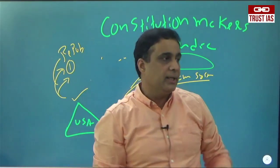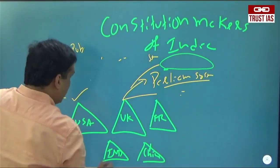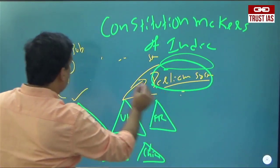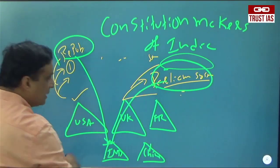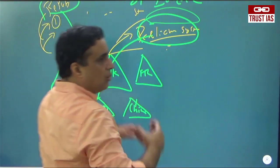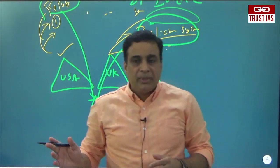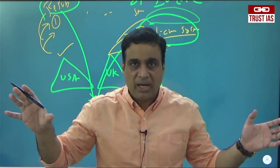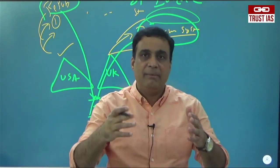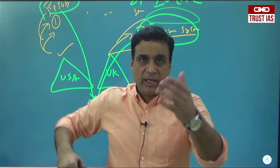Theek hai na? Parliamentary System uthaaya. Yahaan se Republic uthaaya. Aur daal diya kahaan par? India mein. They have brought into India. And that's how. It's not a middle way. It's combining all the various aspects. Alag-alag aspects ko aapne combine karke India mein daal diya. And this is your Indian Constitution.